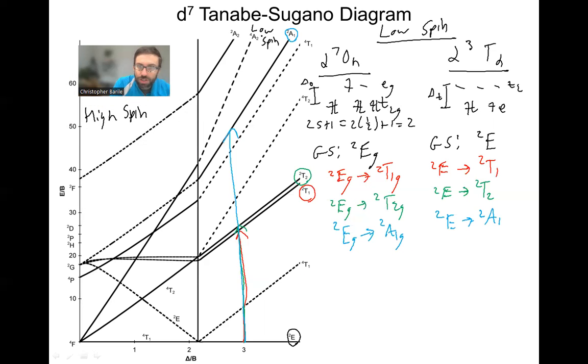And then looks like we also, this is a quartet, so that's not going to be spin allowed. We also have a last very high energy one, which is the doublet A2. And so this one's going to be so high in energy, probably your spectrometer is going to be far in the ultraviolet for most spectrometers. So you're not going to be able to see this, but this again would be doublet EG. That's our ground state for octahedral going to doublet A2G. And then we have doublet E going to doublet A2.